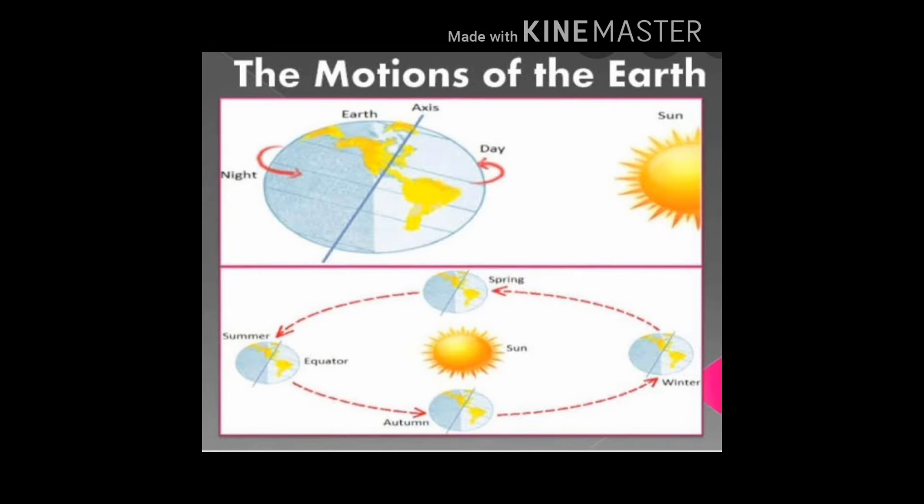The earth is rotating or spinning on its own axis. It is called rotation. Day and night are caused due to the earth's rotation.